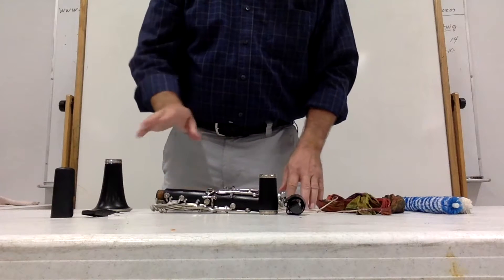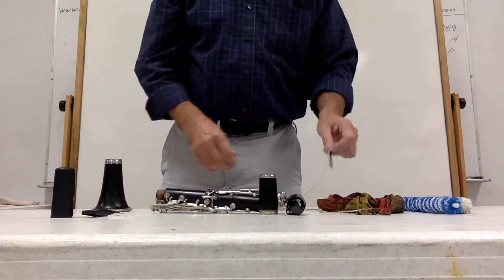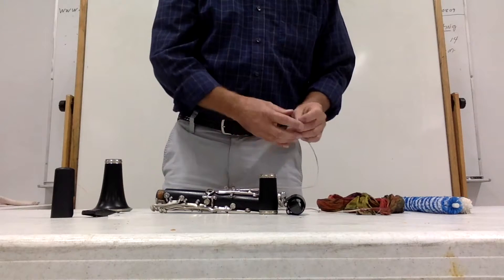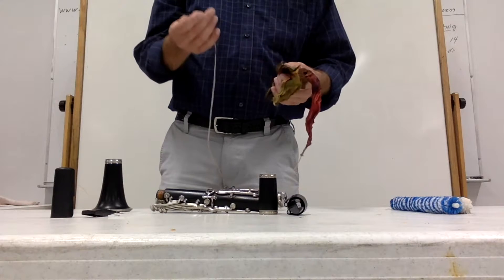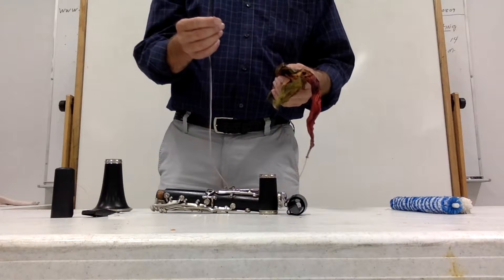Once you have that done we need to clean the inside of the clarinet. This is just a rag that you can buy for about five dollars. We have them here.